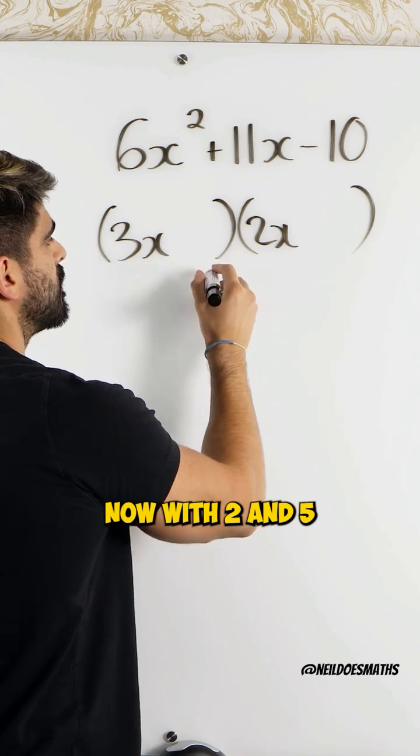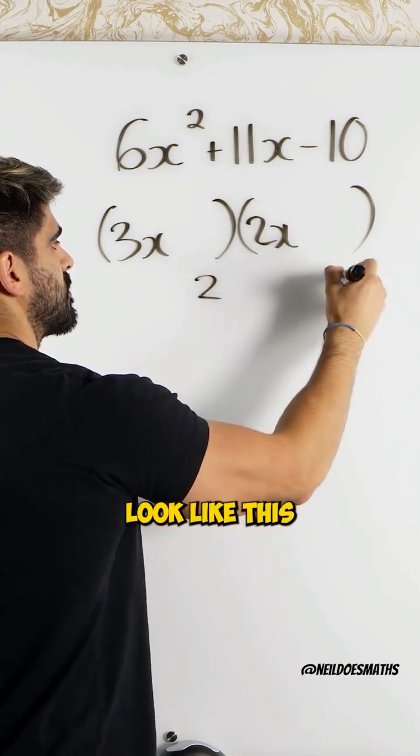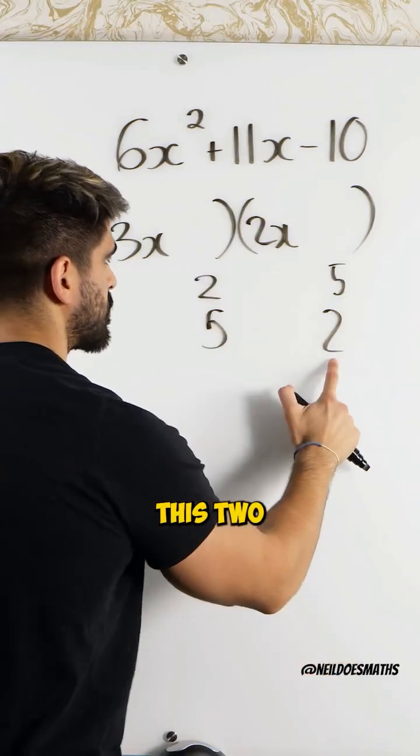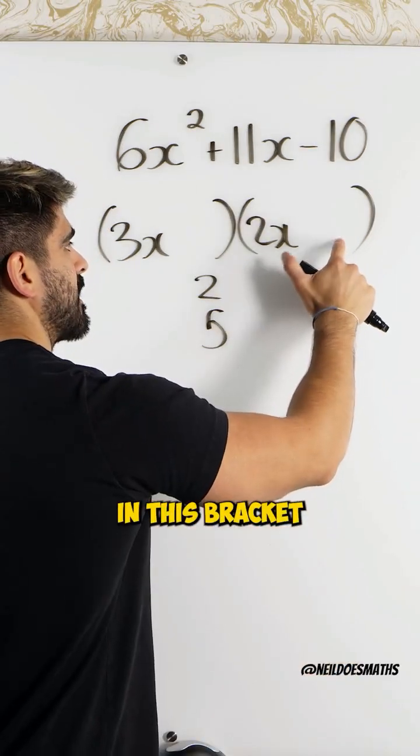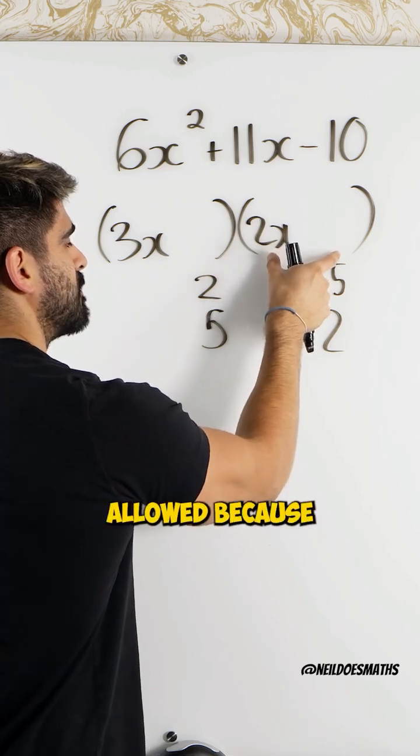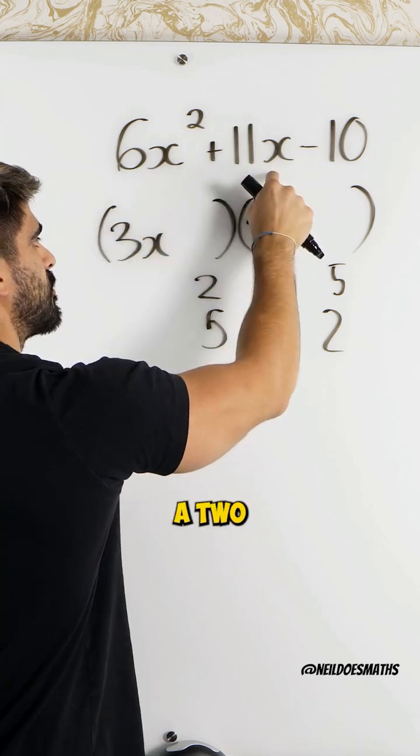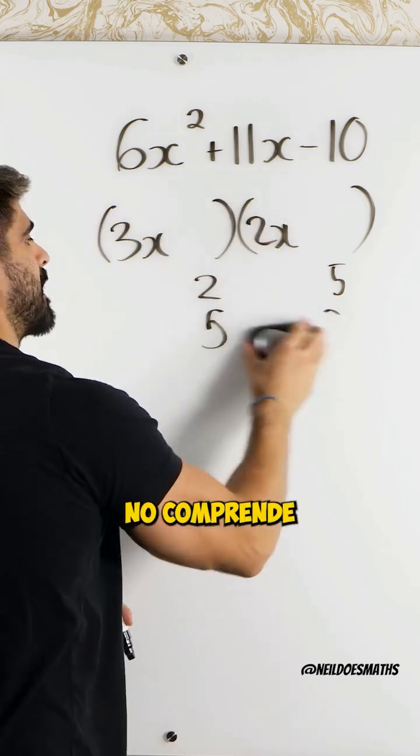Now, with 2 and 5, it could either look like this or it could look like this. There's a trick to this. This 2 cannot go in this bracket because there'll be two even numbers. That's not allowed because with two even numbers, you'd be able to factorize out a 2. You can't factorize out a 2 from here. Meaning, non comprende.